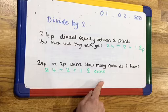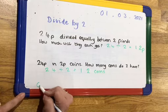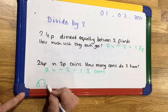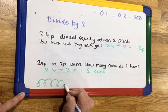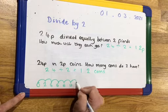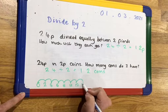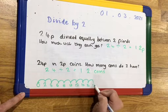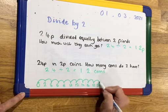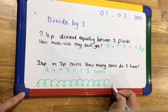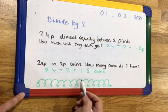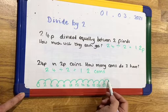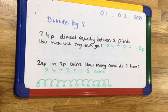I can prove it by jumping on a number line: 2, 4, 6, 8, 10, 12, 14, 16, 18, 20, 22, 24. Let's count the jumps: 1, 2, 3, 4, 5, 6, 7, 8, 9, 10, 11, 12. So there will be 12 coins.